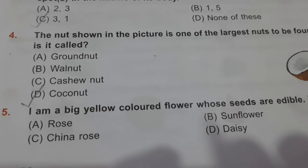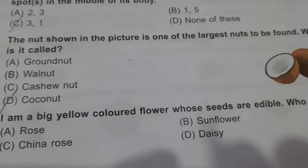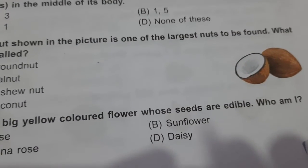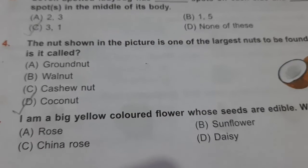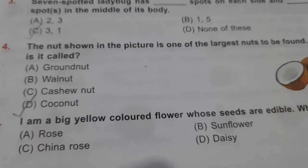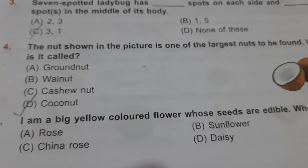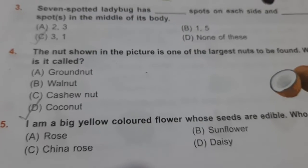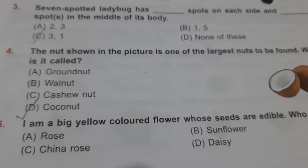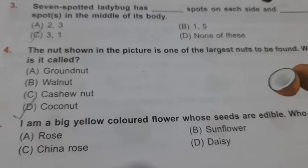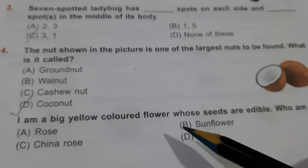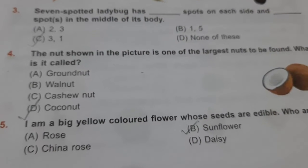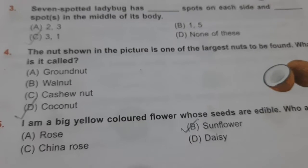I am a big yellow-colored flower whose seeds are edible. Who am I? As you can see in the options, A is rose, B is sunflower, C is china rose, and D is daisy. The big yellow-colored flower whose seeds are edible — we even eat their seeds — that is nothing but sunflower. Please tick it in your question paper and transfer all these answers to the OMR sheet.